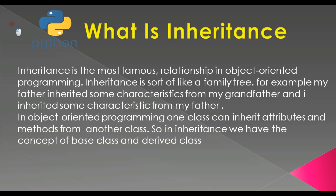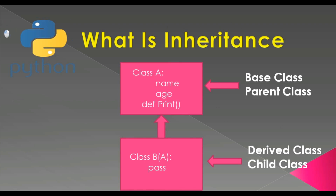In inheritance we have the concept of base class and derived class. For example, I have two classes: class A and class B. Class A has some attributes like name and age, and also a method. Class B inherits from class A, so class B can access all attributes and methods of class A — the name, the age, and also the print method.